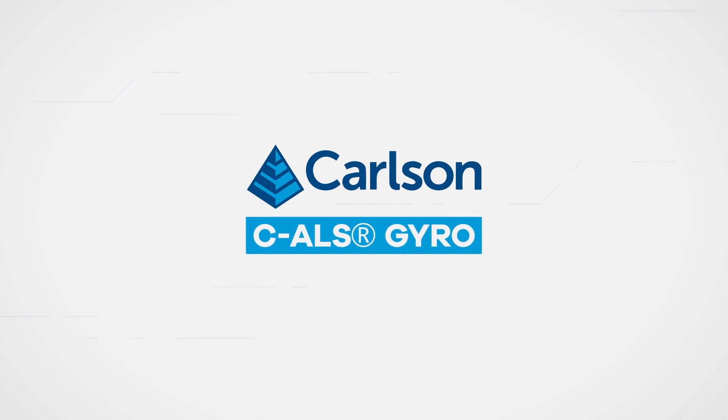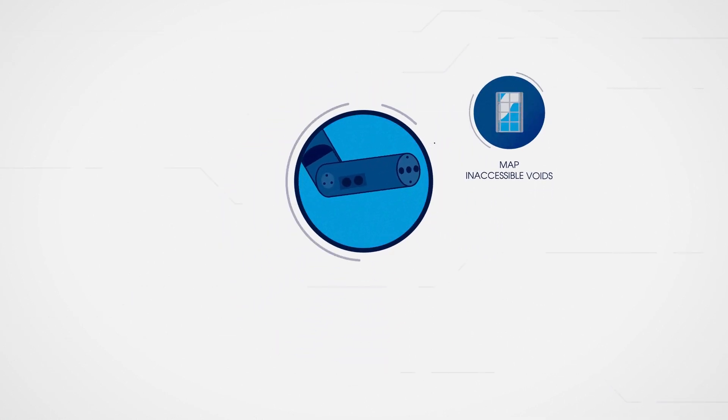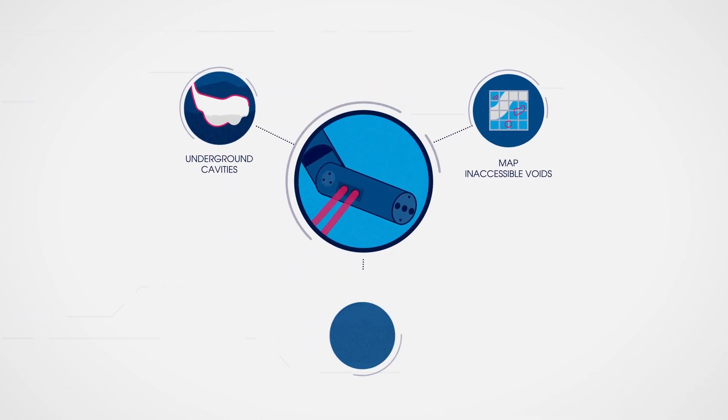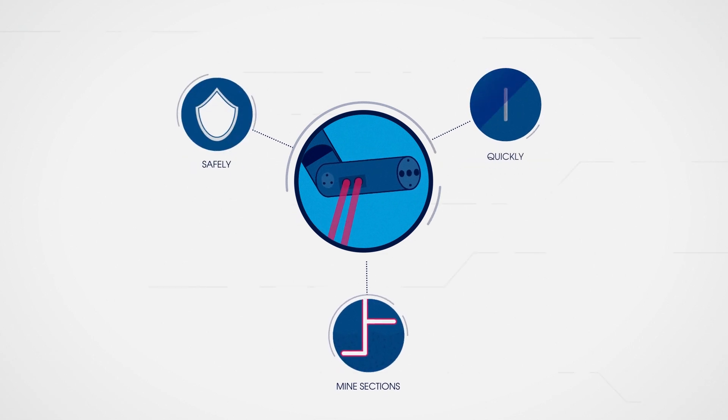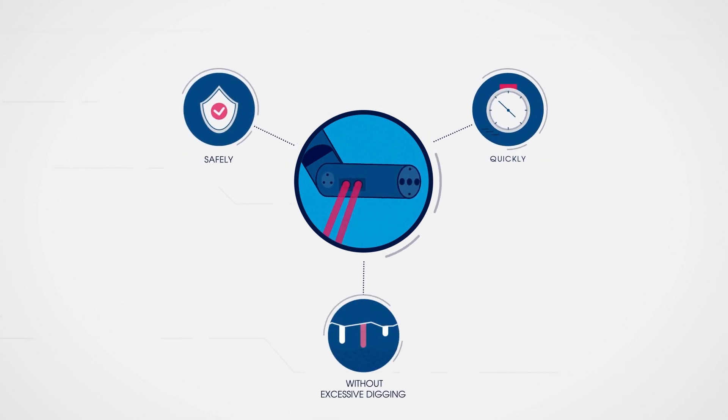The CALS GYRO system from Carlson helps you map inaccessible voids, underground cavities and mine sections safely, quickly and without excessive digging.